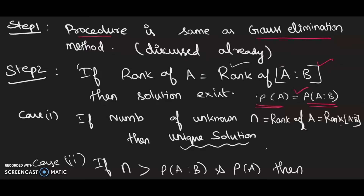If these two ranks are equal, then a solution exists. We have two cases. If n is the number of unknowns — for example, if the equations contain x, y, and z, then n equals 3 — and if the rank of A equals the rank of [A|b] and also equals n, then we have a unique solution.